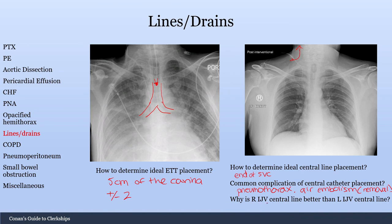Why is the right IJV central line better than the left IJV? Mainly because the flow is better. The right IJV has a straight shot to the superior vena cava, whereas the left internal jugular has to wrap around, which can get kinked and cause slower flow. So right-sided IJVs are generally preferred over left-sided ones.